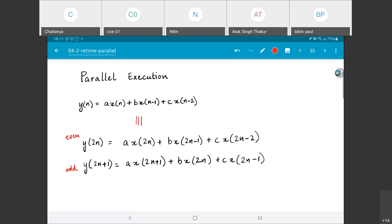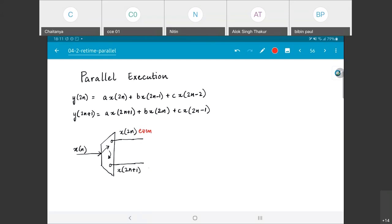What would the architecture for something like this look like? The first thing I would need to do is take the x of n itself and break it up into an odd and even stream. I have the x of 2n, the even values, and this x of 2n plus 1 are the odd values.